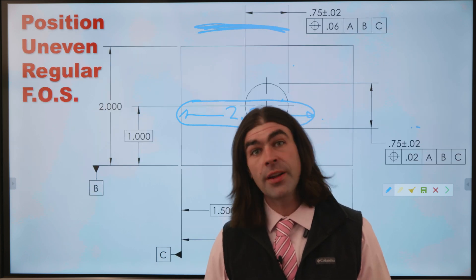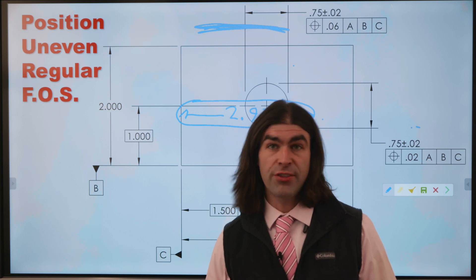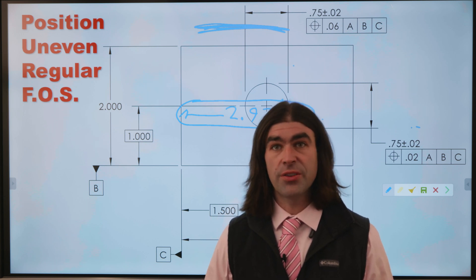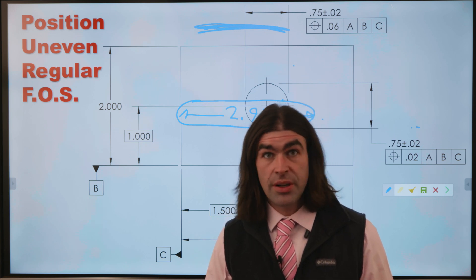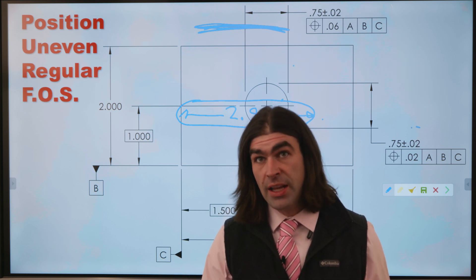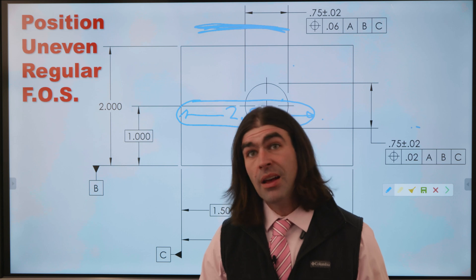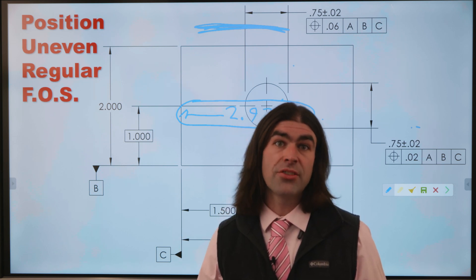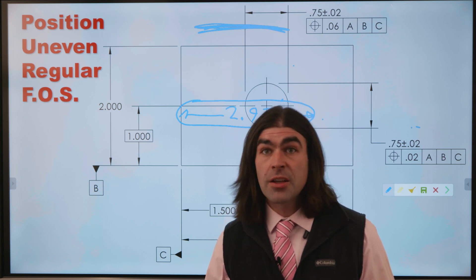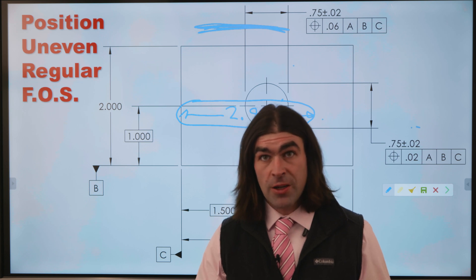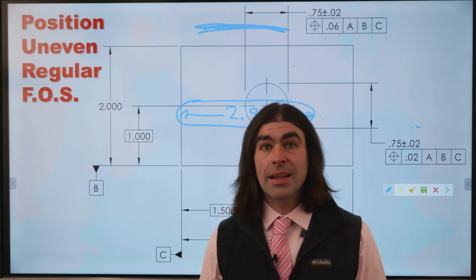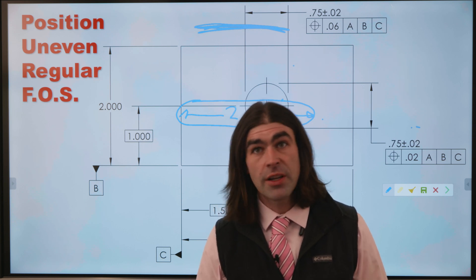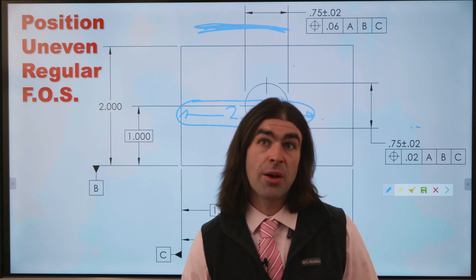That's it for this discussion — just a couple of ways to control irregular features of size, or control regular features of size with uneven tolerances in either direction. You can use position or profile depending on the design. If you're going to make a hard gauge, you might want to use position with MMC, although profile is typically easier to understand. It also depends on your inspection capabilities — if you have a CMM machine you can basically do whatever you want, but if you're working in a place where they check on a plate, position is going to be easier to inspect. If you enjoyed the video, please like and subscribe and check out the channel for more videos.